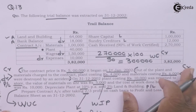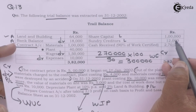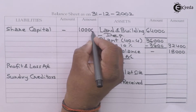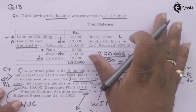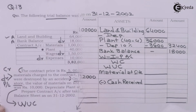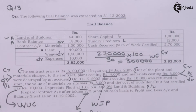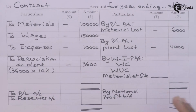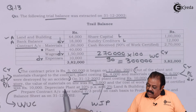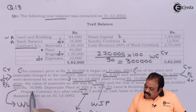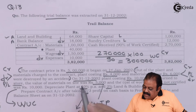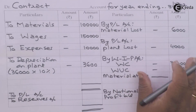Share capital 1 lakh is recorded on the liability side of the balance sheet. Sundry creditors 12,000 on the liabilities side. Work certified of 3 lakhs is credited to contract account under work in progress. Work uncertified — cost of work done but not certified rupees 10,000 — is credited to contract account. Value of material at site rupees 5,000 is also credited under the heading work in progress.